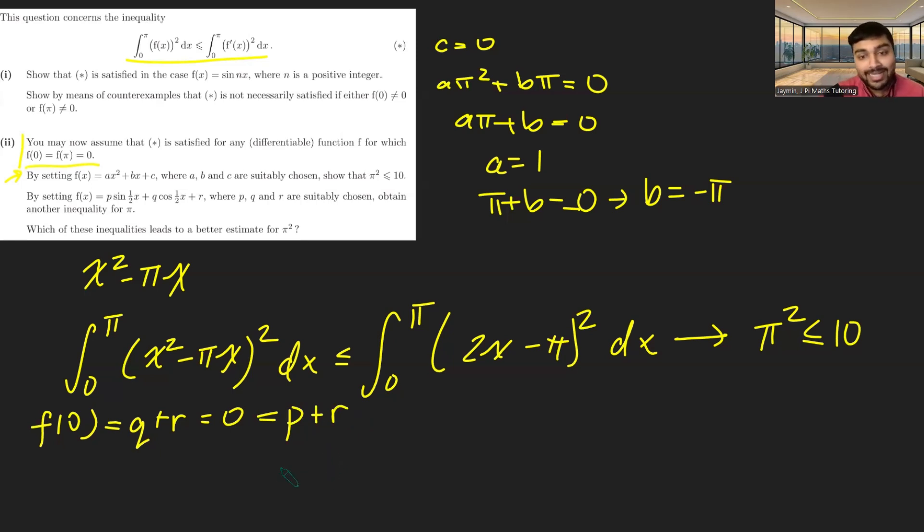And we can see a very clear solution to this is p, q, and r all being equal to 0. But let's say we don't want the trivial solution here. We want them to be non-zero. So maybe we can make p = 1, q = 1, and r = -1. That will solve this here.